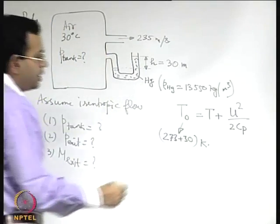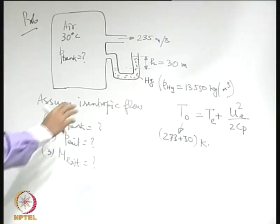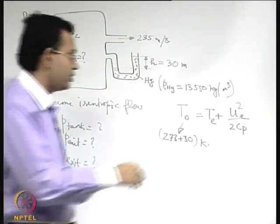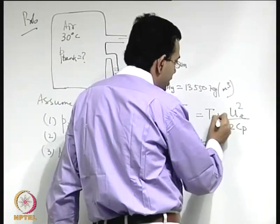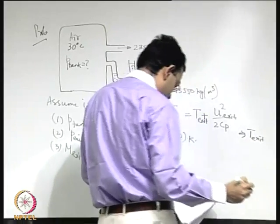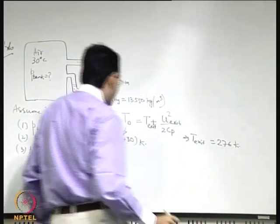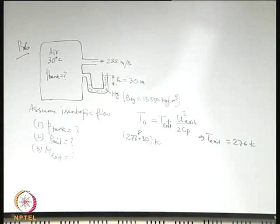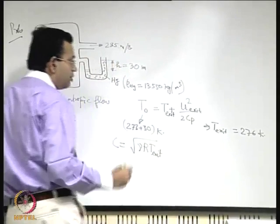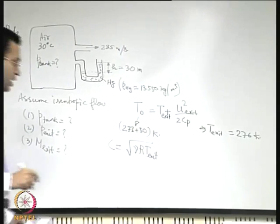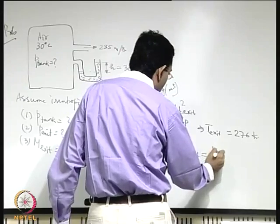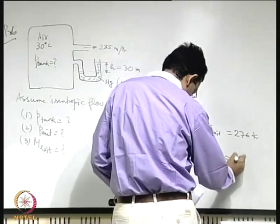To find the exit temperature, since the flow is adiabatic: T + u²/(2Cp) is the same at any point. Using the exit state with u_exit = 235 m/s, we calculate T_exit = 276 K. From T_exit, the sonic speed at exit is √(γRT_exit), and the Mach number at the exit is M = u/C ≈ 0.706.